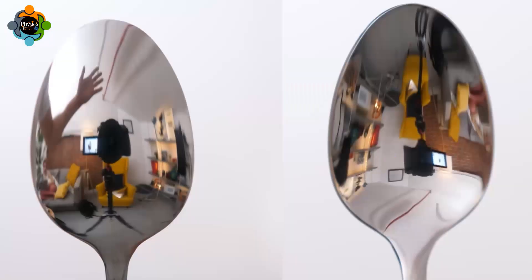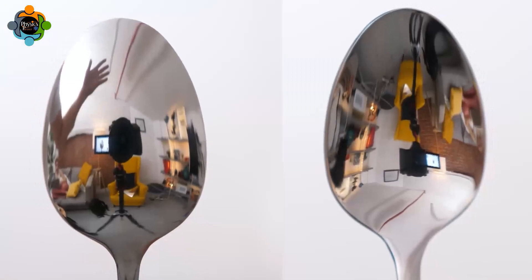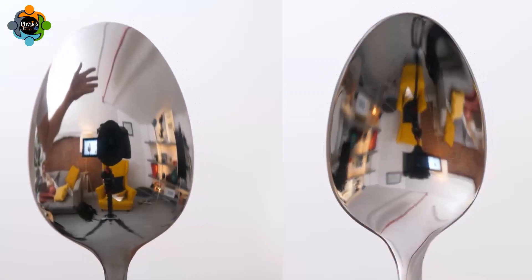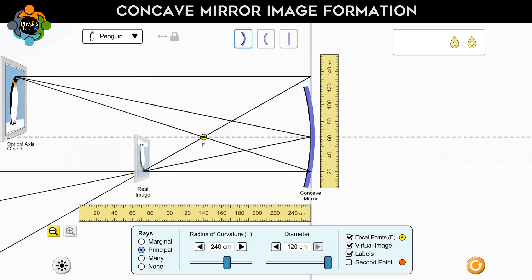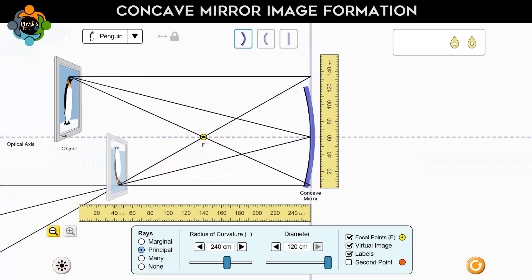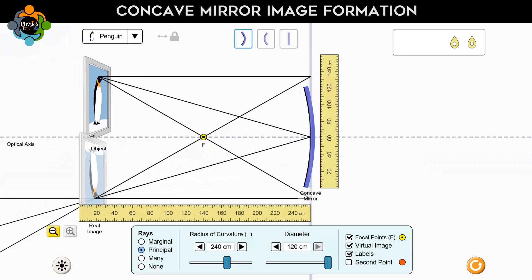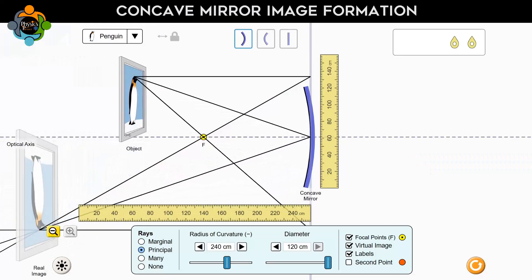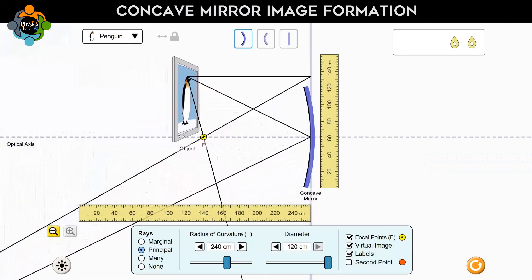On the other hand, the focus of a convex mirror is located behind the mirror, which means its focal length is considered positive. The way these mirrors form images is perhaps the most important distinction. A concave mirror typically forms images that are real, inverted, and enlarged.